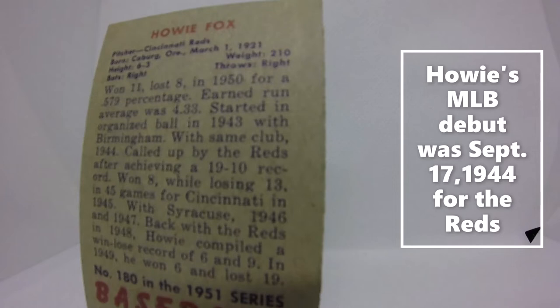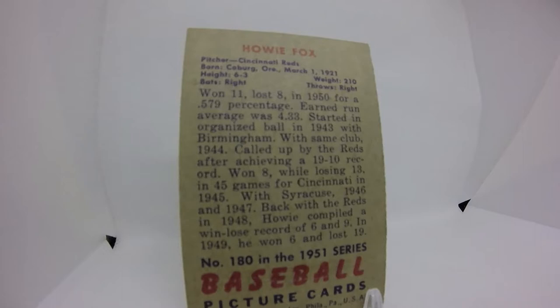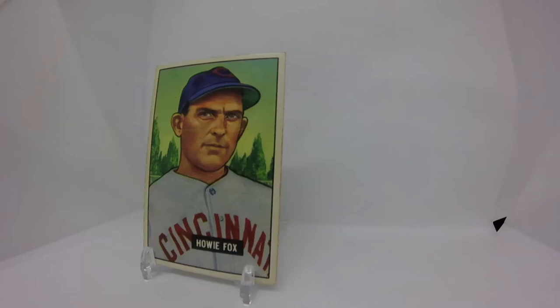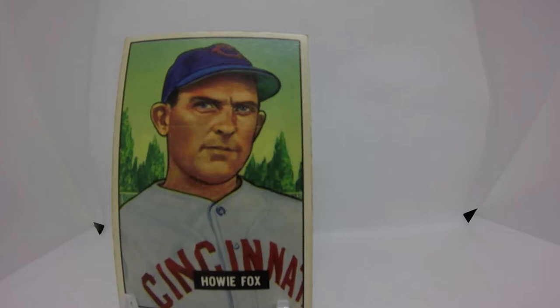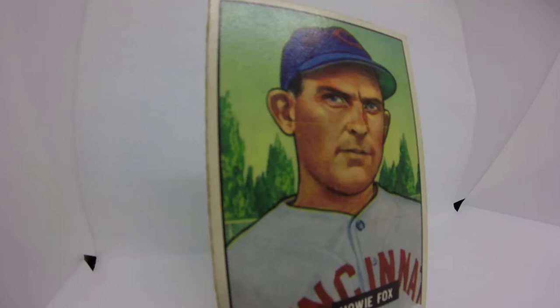Not too bad for the old-timey veteran who started organized baseball in 1943 with Birmingham. He's been around a while. There's a unique little statistic here for Howie Fox — he's the one and only player to play for the AAA Baltimore Orioles and also for the Major League Baltimore Orioles team, because it went from a minor league team in 1953 to a major league team in 1954. He was the only player they kept from the minor league team and actually stuck to play with the Orioles in 1954.